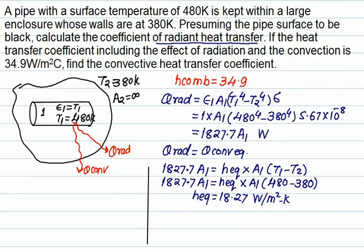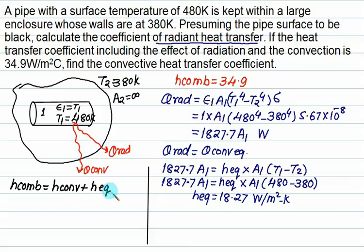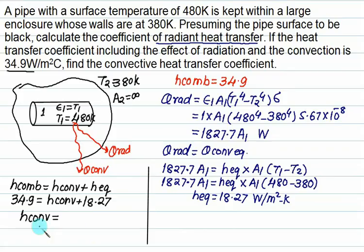The combined heat transfer coefficient h_combined equals the convective component plus the equivalent radiation coefficient. The total combined coefficient is given as 34.9 W/m²·K. Therefore, the purely convective heat transfer coefficient equals 34.9 minus 18.27, which gives 16.62 W/m²·K.